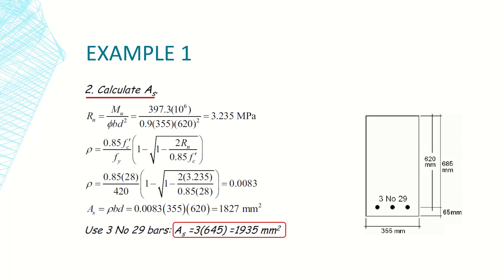After determining the moment, I calculate the required area of steel reinforcement. First, I use the equation Rn = M_ultimate / (φ × b × d²). M_ultimate is the design moment, b is the width, and φ is the strength reduction factor. Preliminarily, I'll assume φ = 0.9, but this assumption must be verified by checking that the section is tension-controlled.